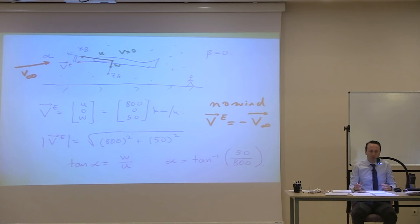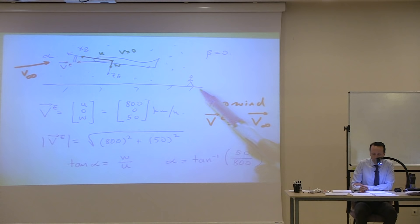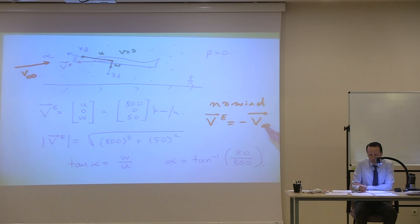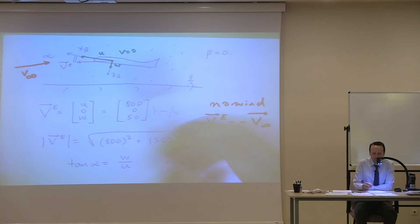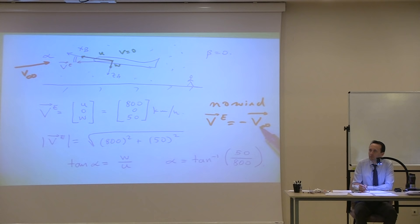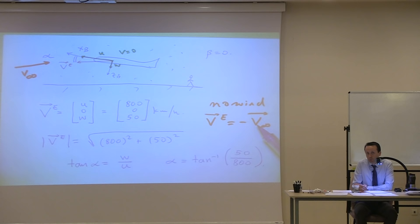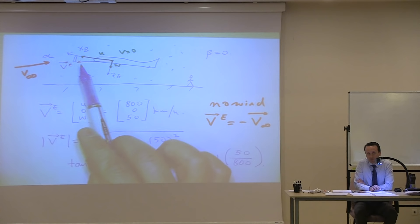What you need to understand is that V_infinity — the velocity of the air particles moving towards the airplane — and the velocity vector of the airplane with respect to an observer on Earth are not the same velocities. They are different. But in this case, because there is no wind and the atmosphere is still, they turn out to be the same magnitude, just in the opposite direction.